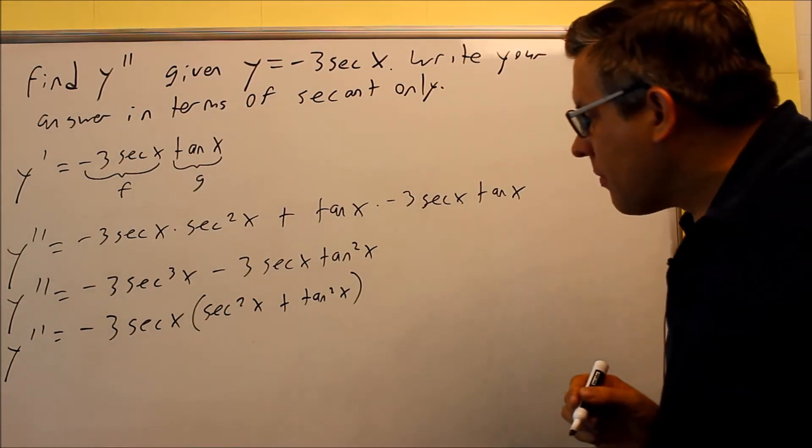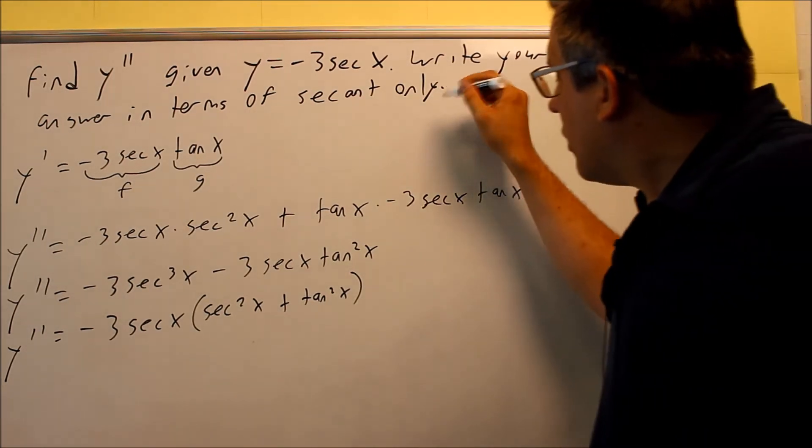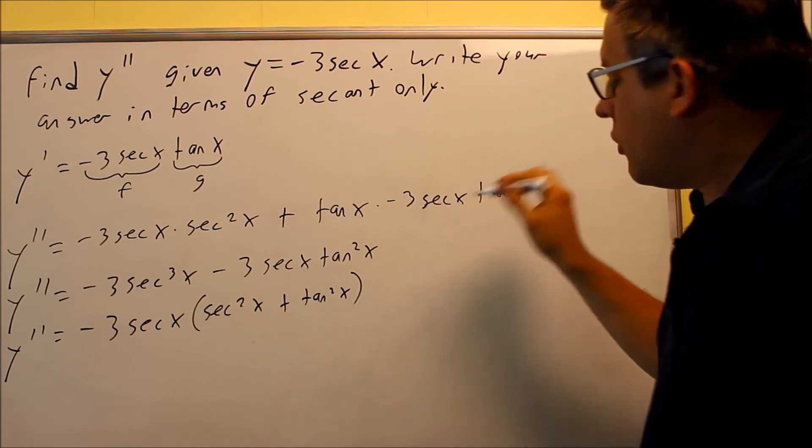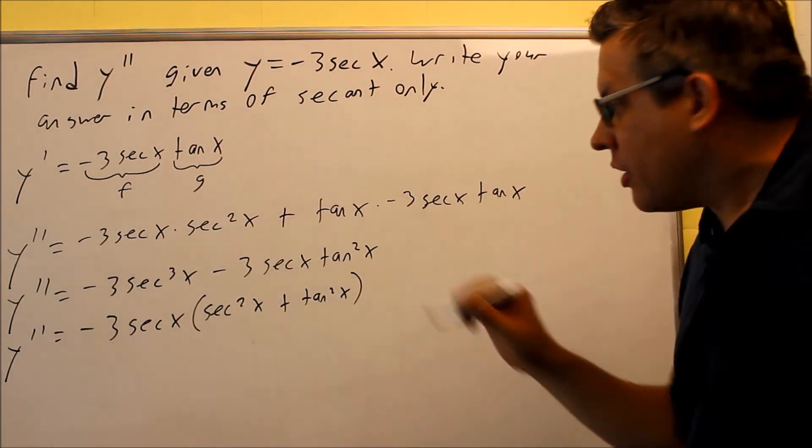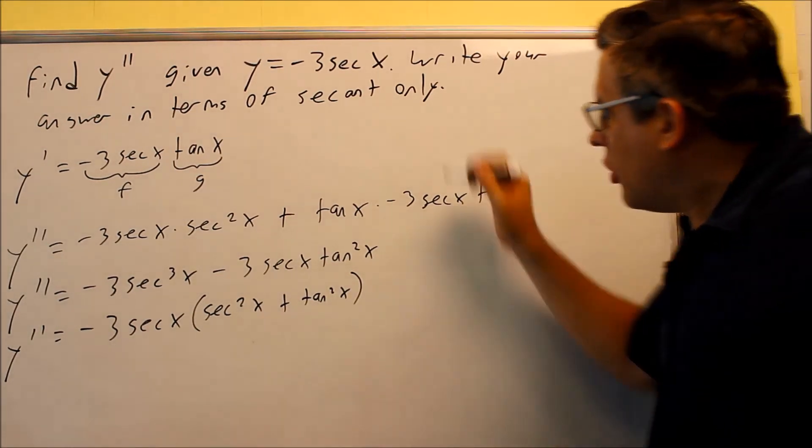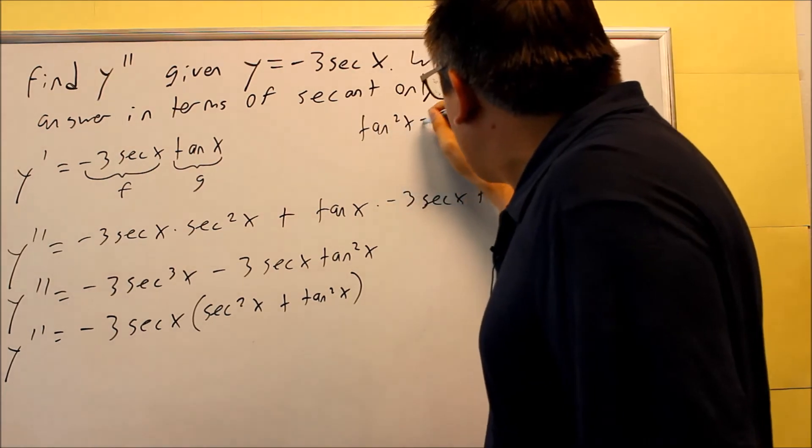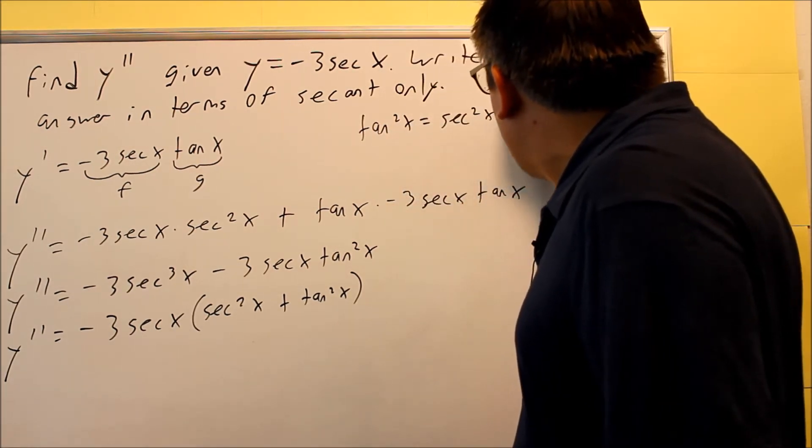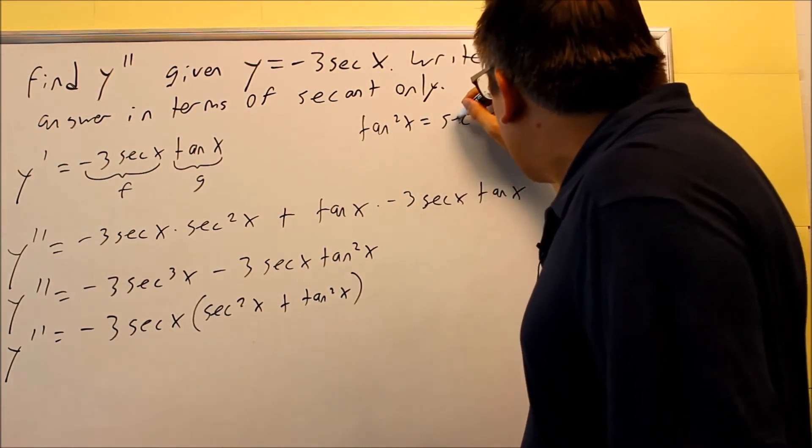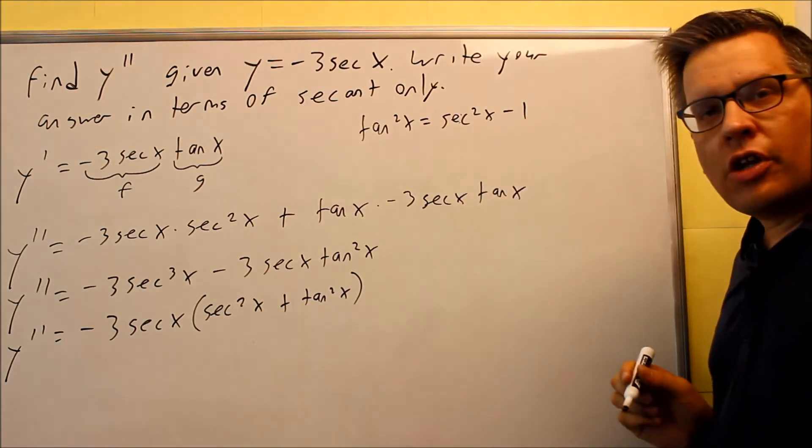Now, there's an identity on this. You've got to recall back to trig in order to apply this one, tangent squared x equals secant squared x minus 1. That's an identity that you should know there.